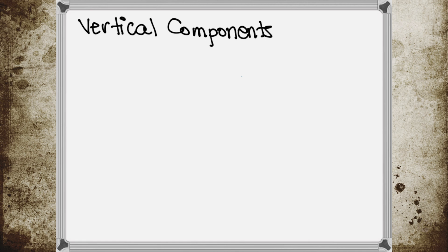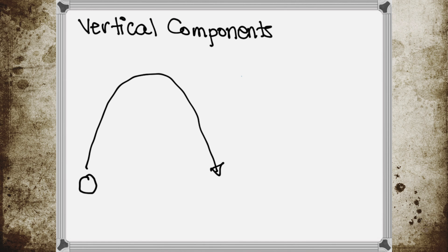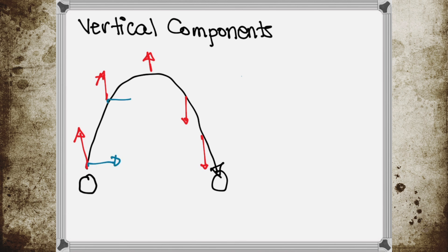Now if you throw a ball, you will have your vertical component — let's say the vertical component is the red one — going upward and then downward. And of course, you also have your horizontal component, which goes in one direction.